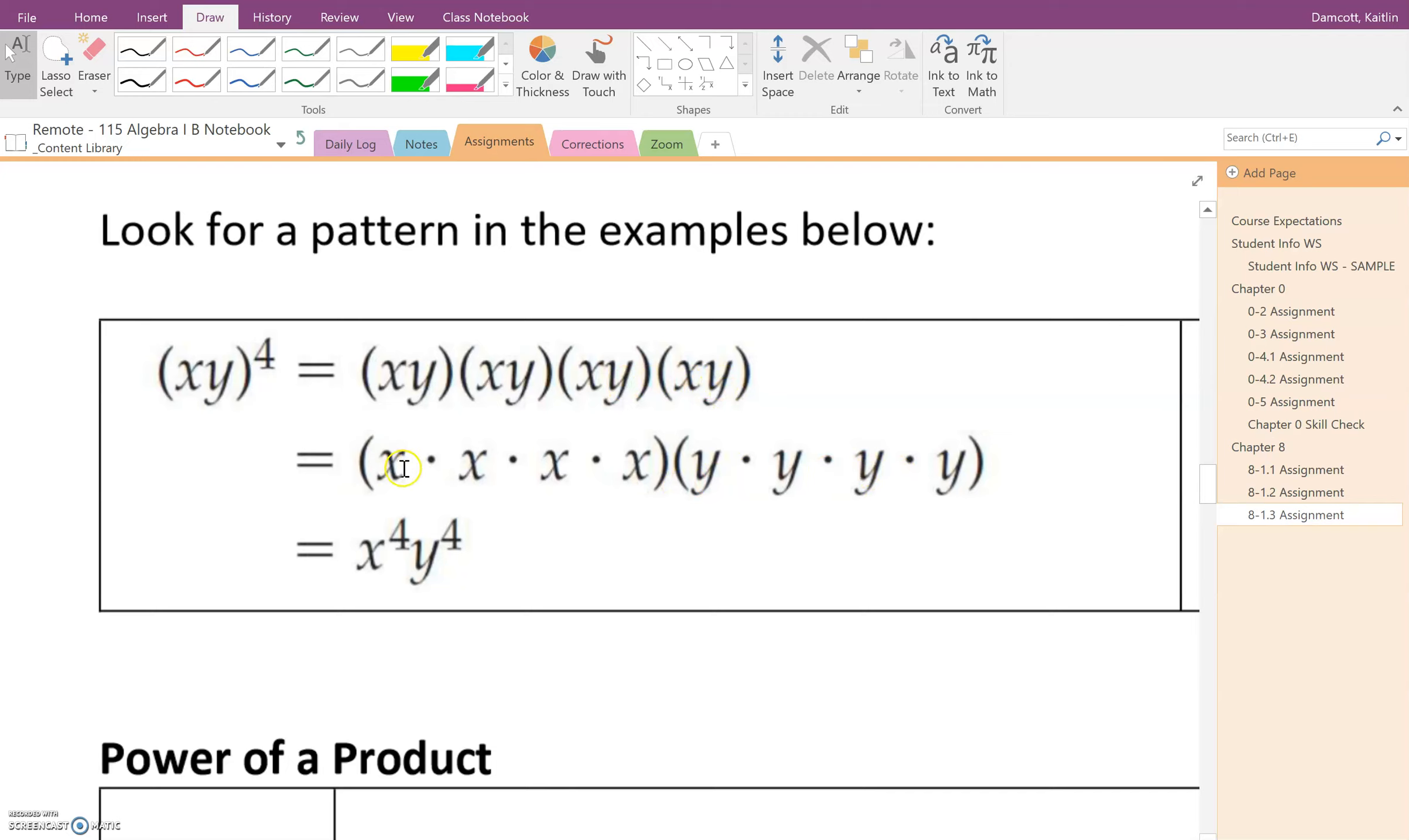And then we can determine, okay, we have four x's here that we're multiplying together. We can switch that back into a power. So x to the fourth power because there are four factors of x. And same idea, there are four factors of y, so we can write that as y to the fourth.